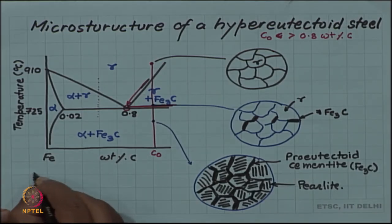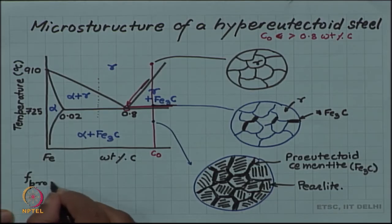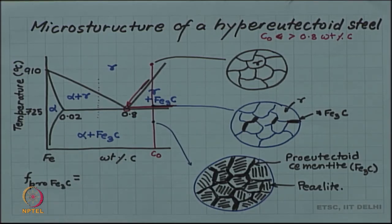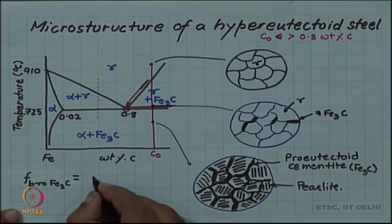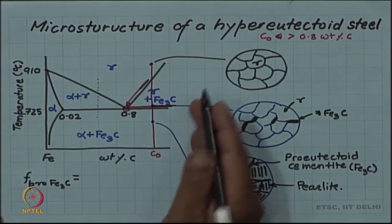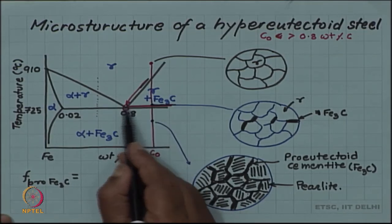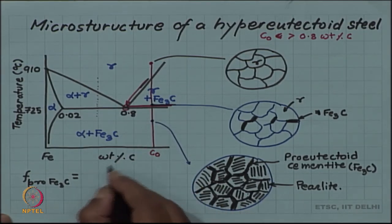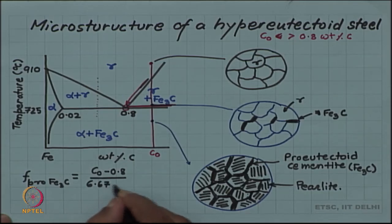If you look at the amount here, again you can calculate the amount of proeutectoid cementite in the alloy. I am just writing pro Fe3C in short. You will again use a tie line above the eutectoid horizontal, that red tie line which I have drawn. If you have a composition C naught, Fe3C is now on the right hand side of this diagram. The left arm is representing the Fe3C fraction. The Fe3C fraction will be C naught minus 0.8 divided by 6.67 minus 0.8.